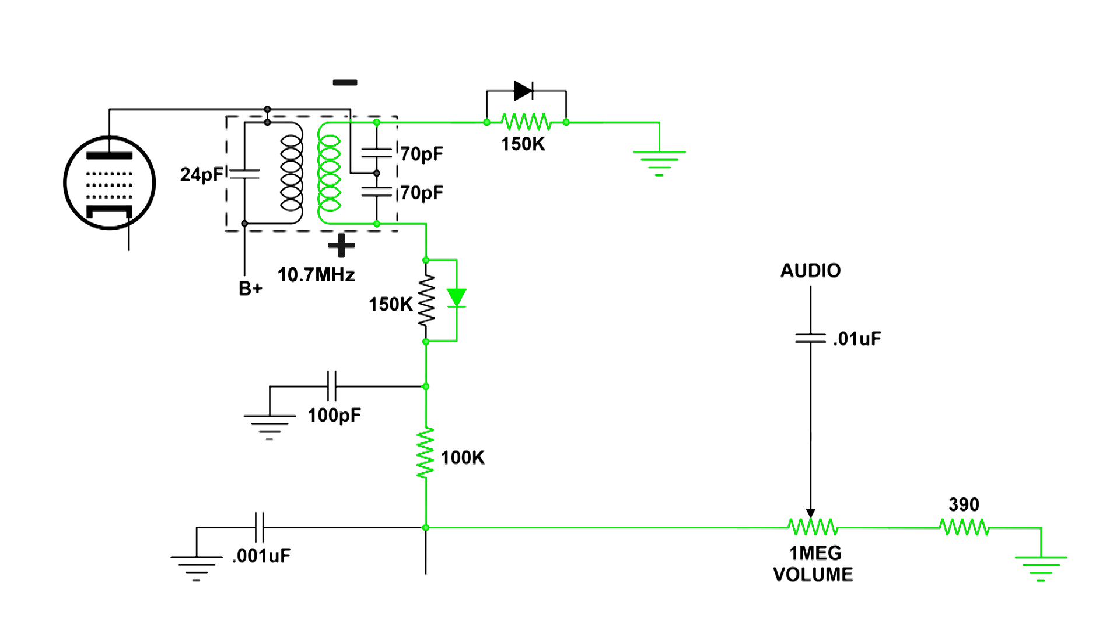Now the top diode is not conducting. We just have a path from ground through the 150k ohm resistor then through the coil and now down through the other diode that is now conducting and through the 100k ohm resistor and then over to the volume control. Now we have both halves of the audio signal.